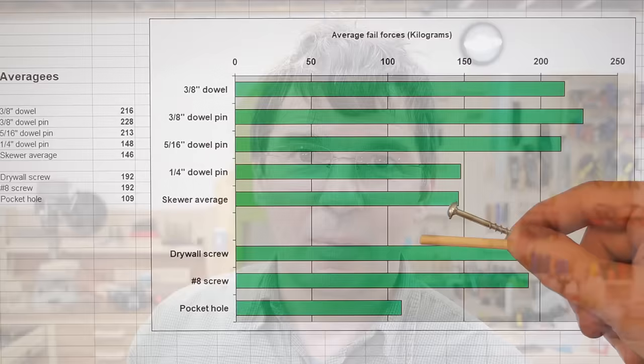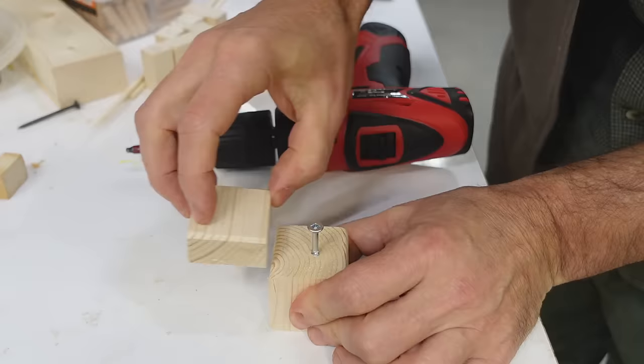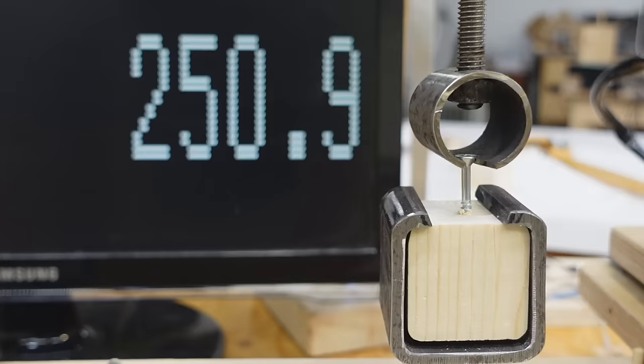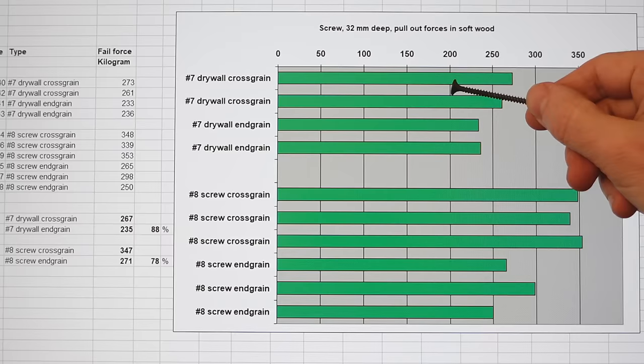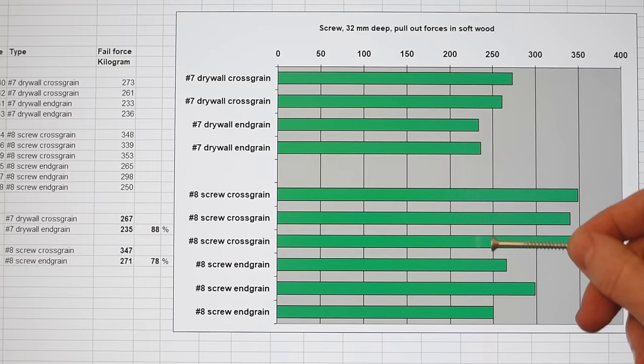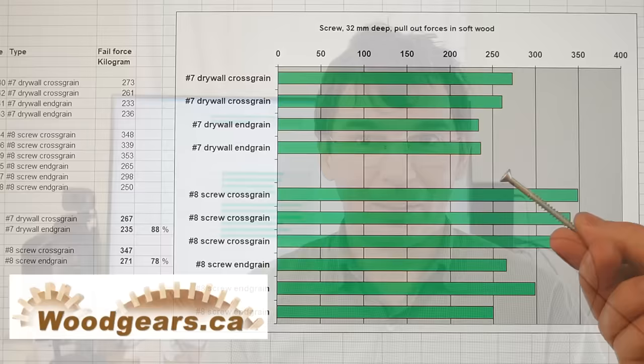Other than the pocket holes my screw samples relied on screws holding in the end grain. So, I screwed some more screws 32mm into blocks of wood end grain and side grain and tested that on my strength testing machine to see how well the end grain actually holds. And, these tests were all without pilot holes and for the drywall screws the end grain held 88% as well as the cross grain. For the number 8 screws it wasn't quite as consistent but on average we got 78% of the holding power in end grain than in cross grain. So, surprising, screws in end grain work almost as well as screws in cross grain.